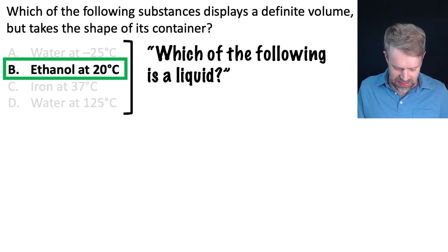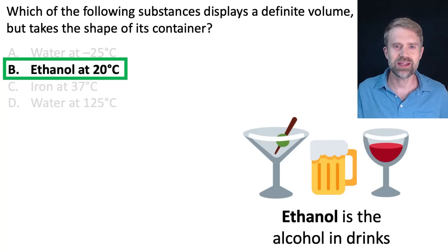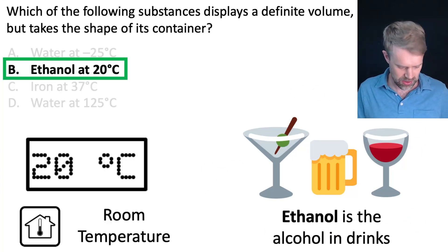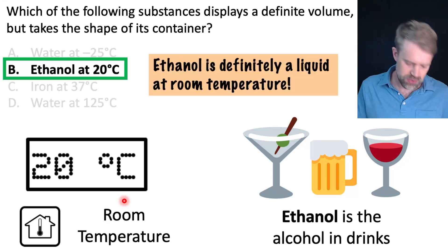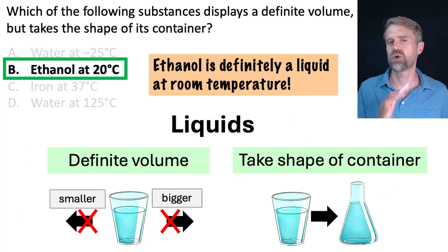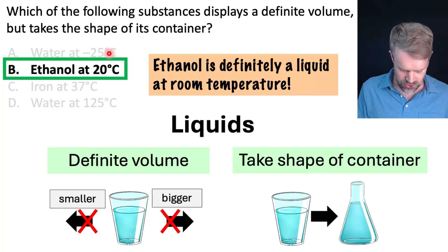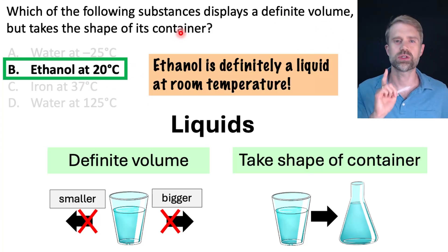We can cross C off as well. And that means that the answer must be B, ethanol at 20 degrees Celsius. So, pick it. And just in case you want to know a little bit more about this, ethanol is a type of alcohol. It's a type of alcohol that you find in drinks. And 20 degrees Celsius is about room temperature. And you know that ethanol is definitely a liquid at room temperature. So, to connect this whole question together, ethanol at 20 degrees Celsius is a liquid, which means it has definite volume and it also takes the shape of its container.